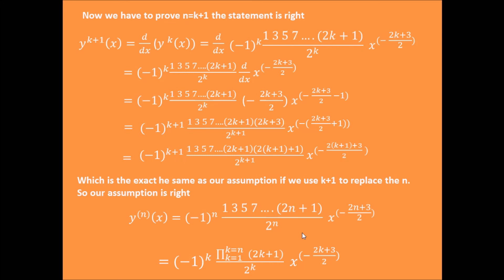This exercise shows you how to get the nth order derivative general formula for functions. First, you calculate the first, second, and third order derivatives. Based on the results, you make a reasonable assumption. Then you prove that assumption using the induction method: first prove it holds when n equals 1, then assume it holds when n equals k, and based on that, prove it holds when n equals k plus 1. If you complete these three steps, then the assumption is proven. This is all for today. Thank you for watching.